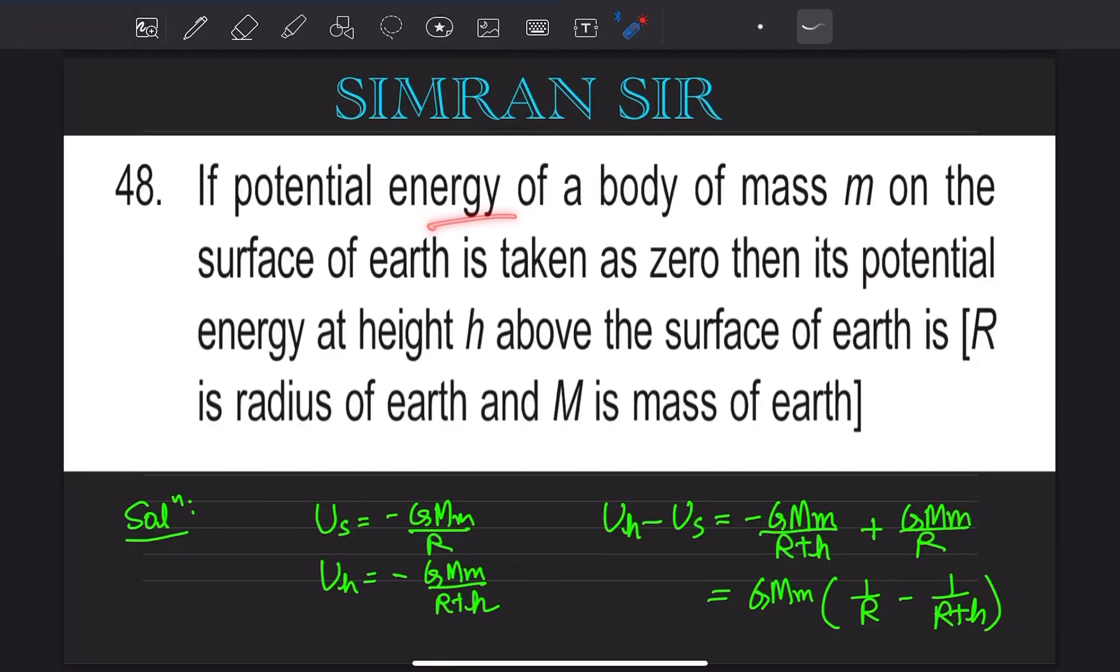If potential energy of a body of mass M on the surface of Earth is taken as zero, its potential energy at height h above the surface is...